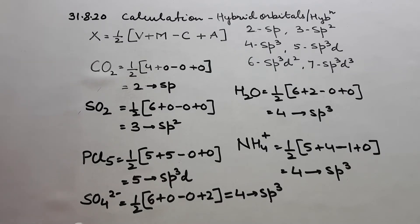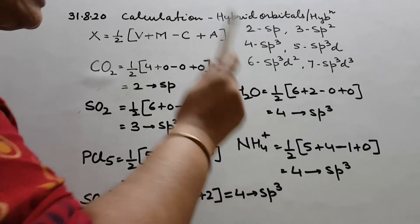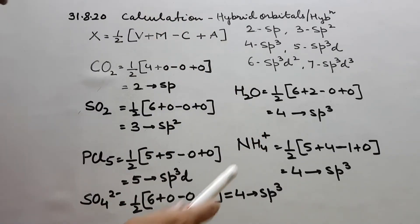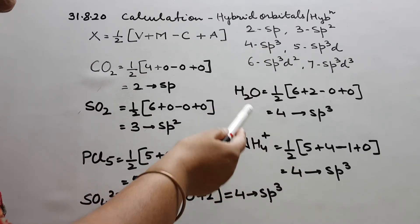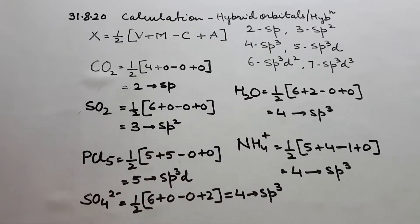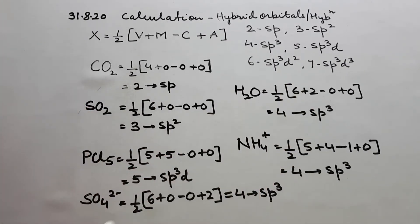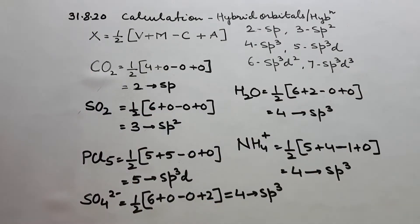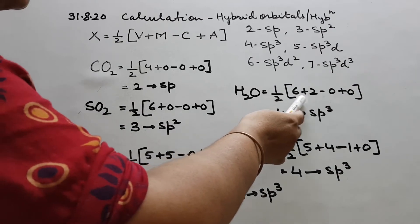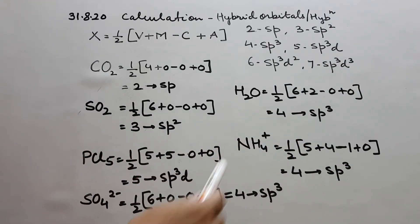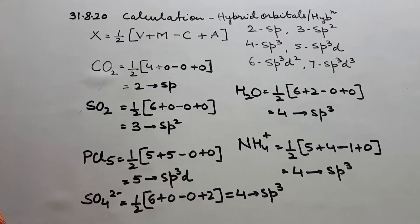Suppose I go for H2O. Central atom is O. We discussed last time. O has 6 electrons in the valence shell, so here v will be 6. Formula is half here. And it has got neighboring atoms, monovalent atoms, they are 2H, so it is 2. No charge of cation or anion here. So 6 plus 2 is 8, 8 by 2 is 4. And when we have 4 we know it is sp3.